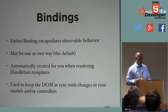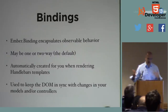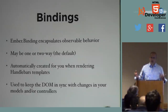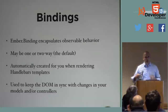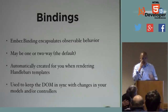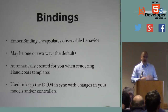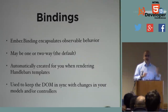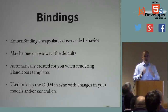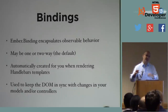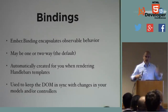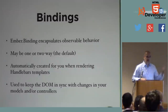A one-way binding only receives changes from some other property. A two-way binding receives changes from another property, but you can also set it and that change will trickle back to the property it is mirroring.